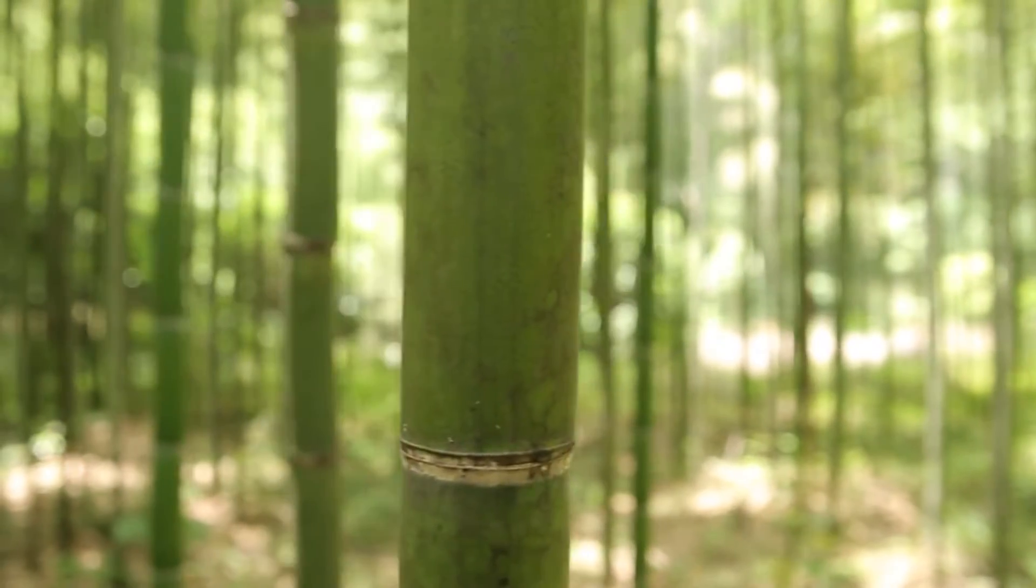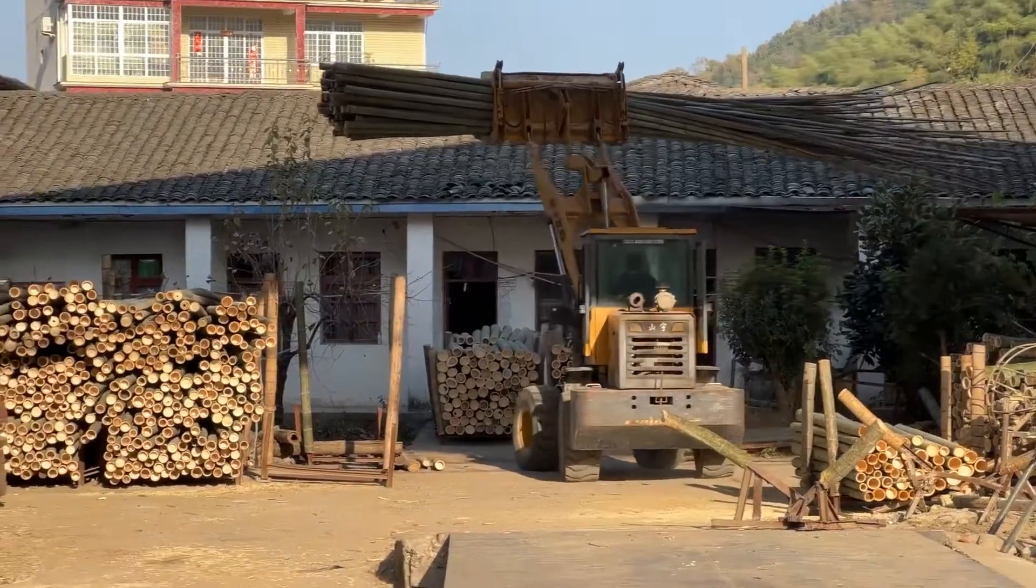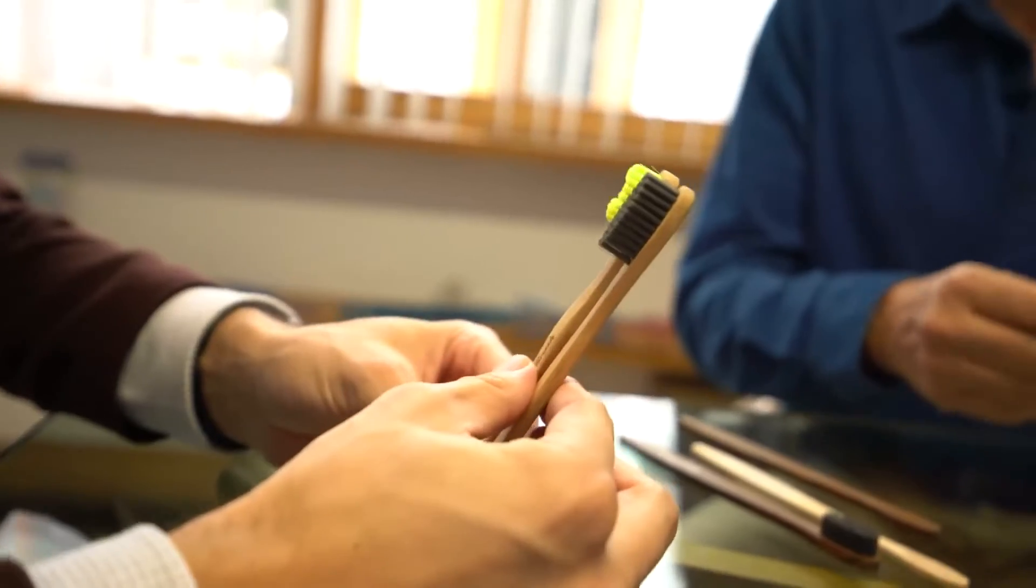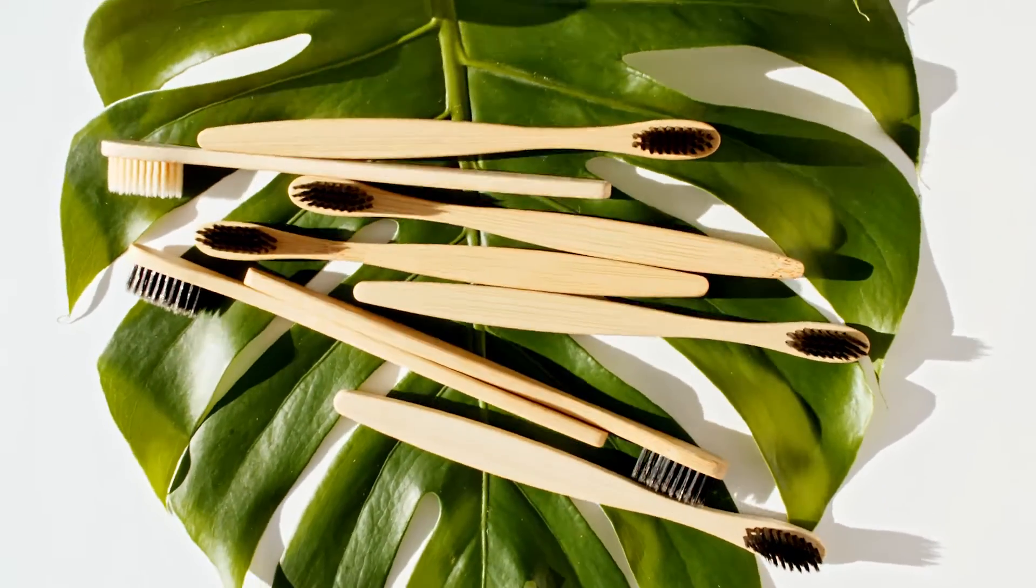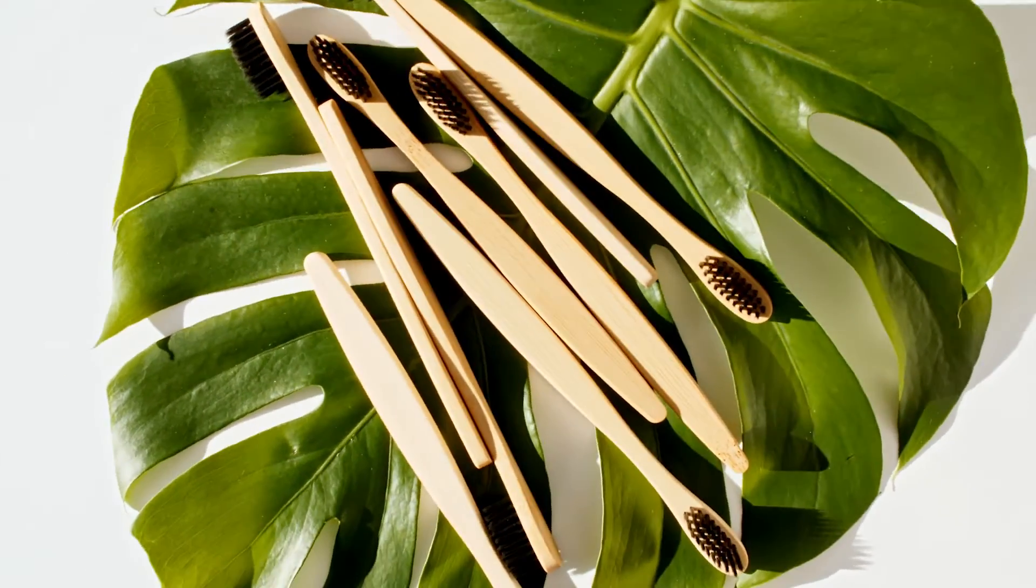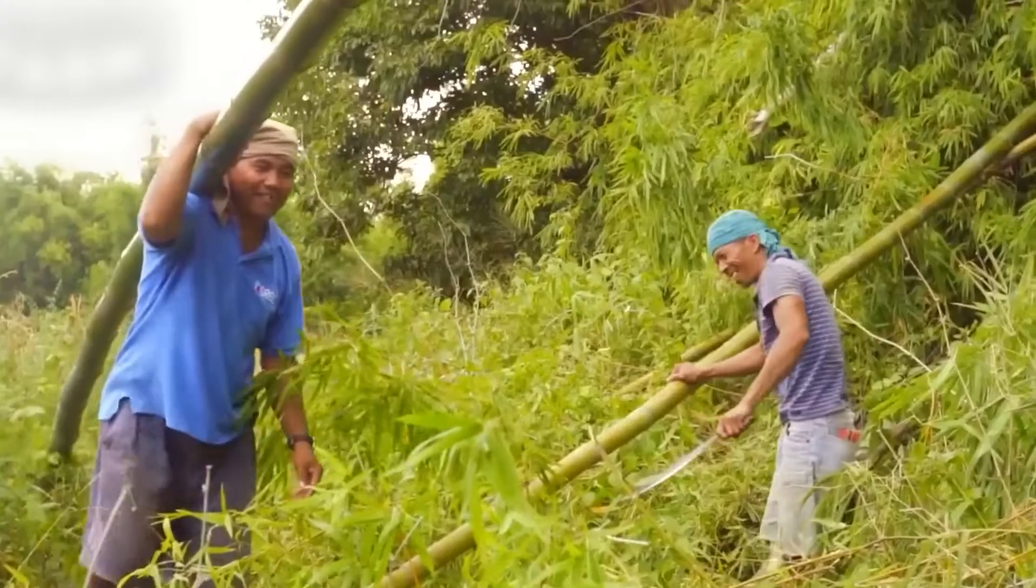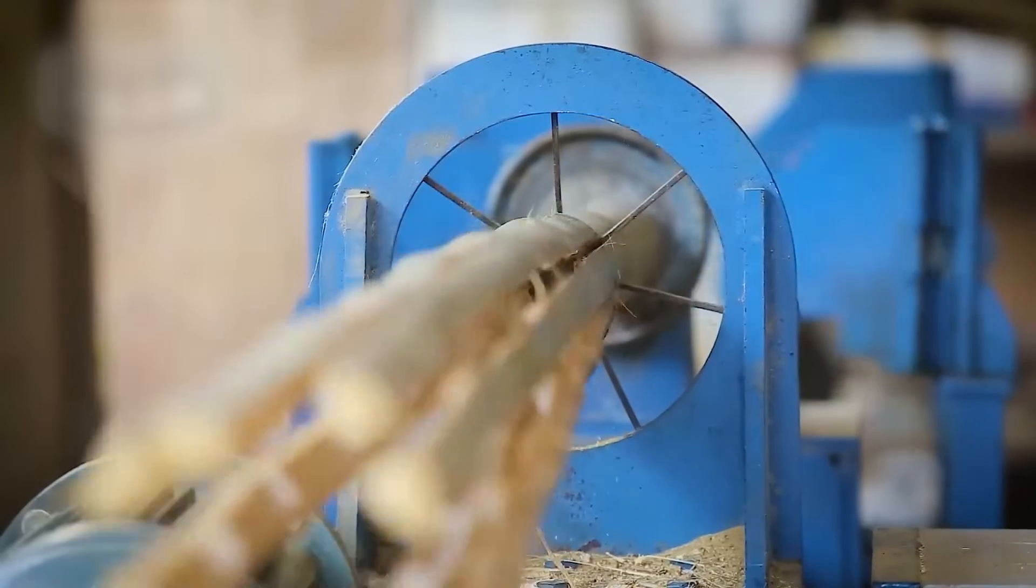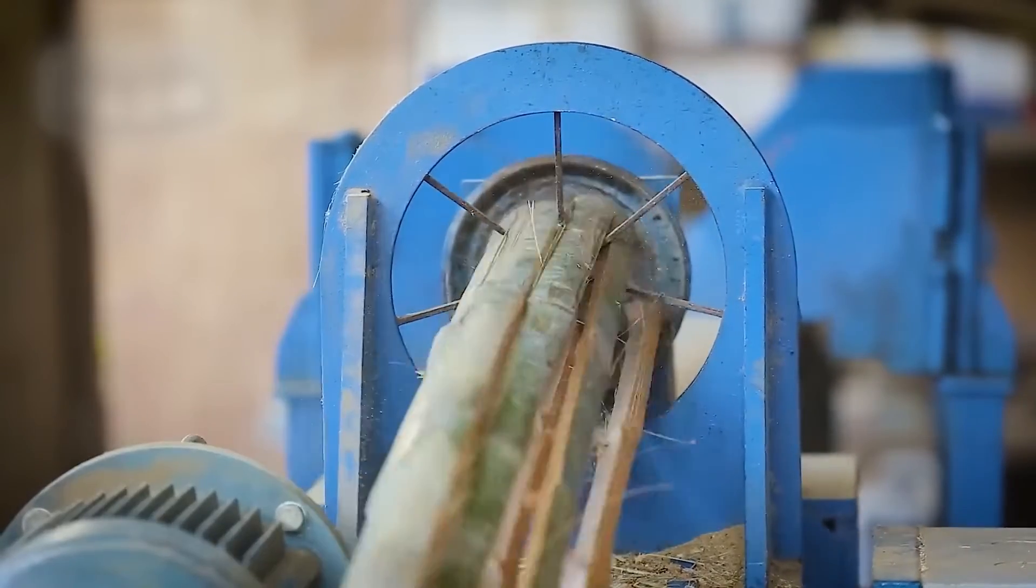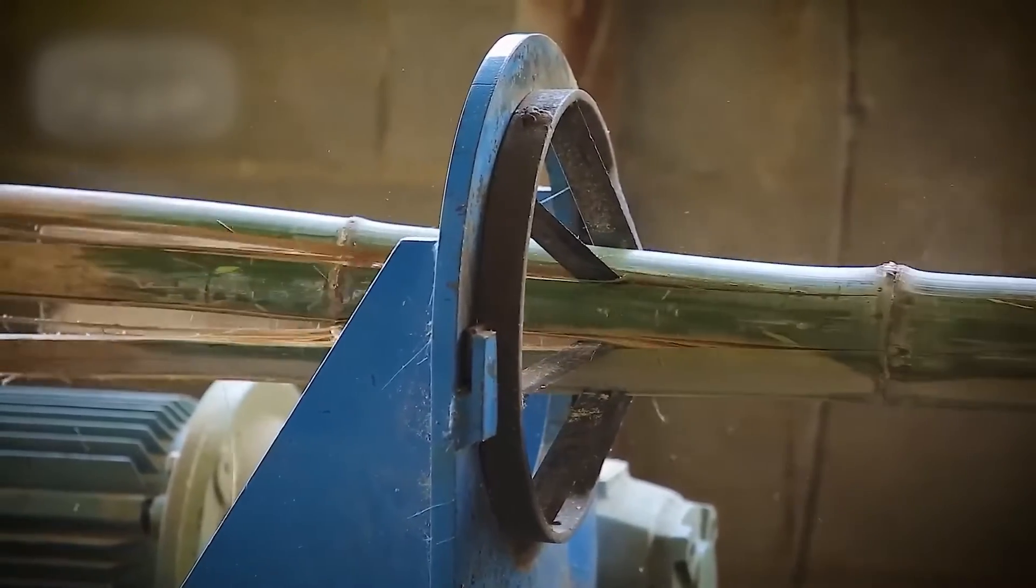Bamboo is a natural material that grows fast and can be procured without harming the environment. Bamboo toothbrushes typically have a shorter life expectancy than plastic toothbrushes. However, they are biodegradable and can be composted in the soil after use. The production of these types of handles begins with harvesting bamboo stalks. Once harvested, the bamboo stalks are stripped of leaves and nodes. Nodes are the joints or segments along the bamboo stalk.